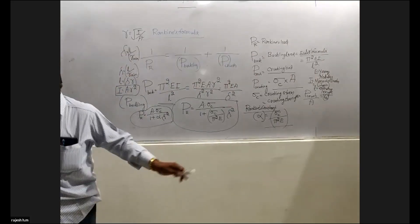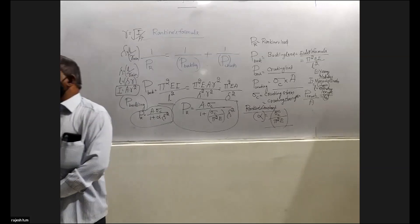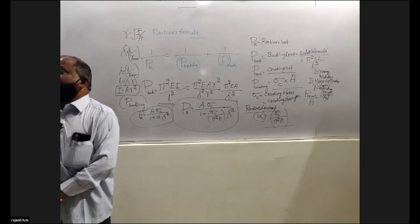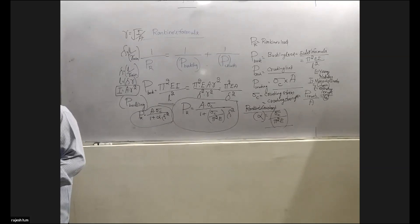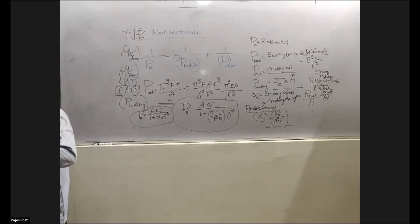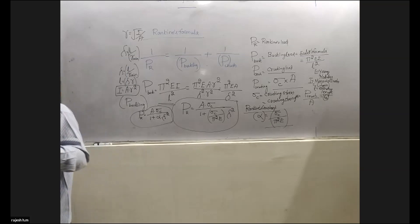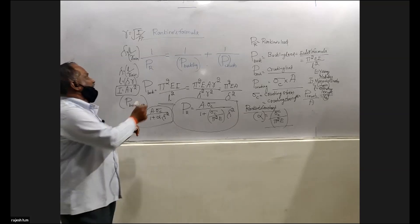The questions may be of this type: Rankine's formula is valid for — given buckling load, given crushing load, given both crushing load and buckling load, or none of the above. The correct answer is both buckling and crushing. This formula is valid for both buckling load and crushing load — that is, for any type of column: maybe a short column, maybe a long column, maybe an intermediate column.